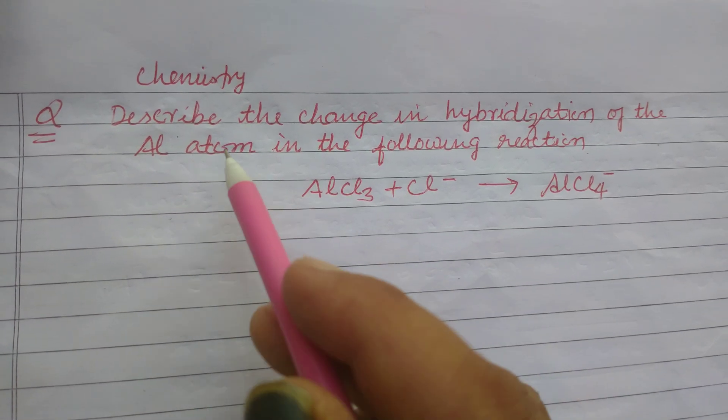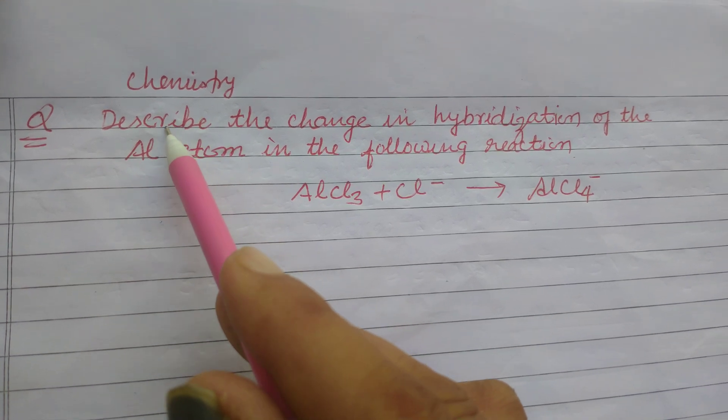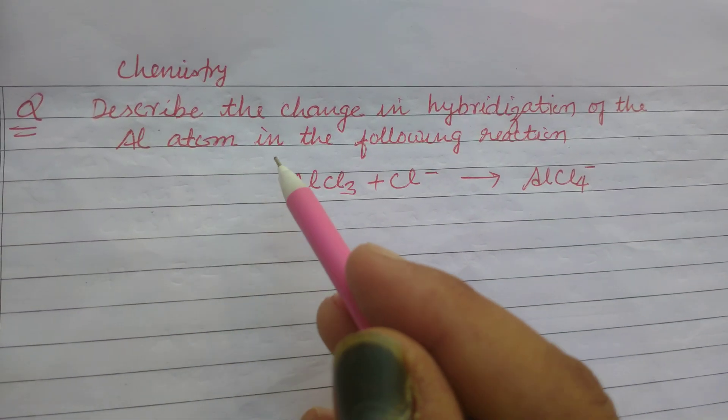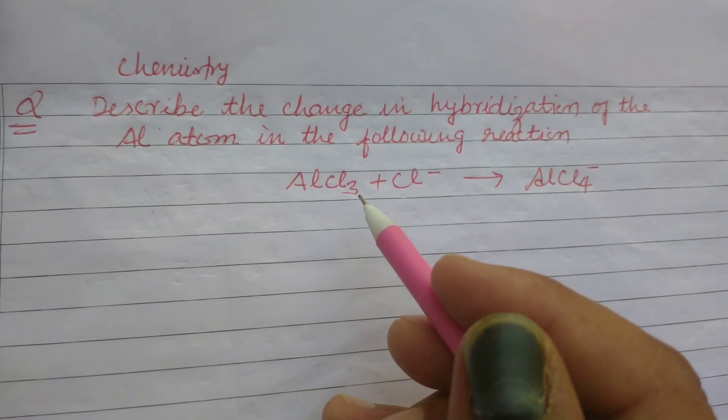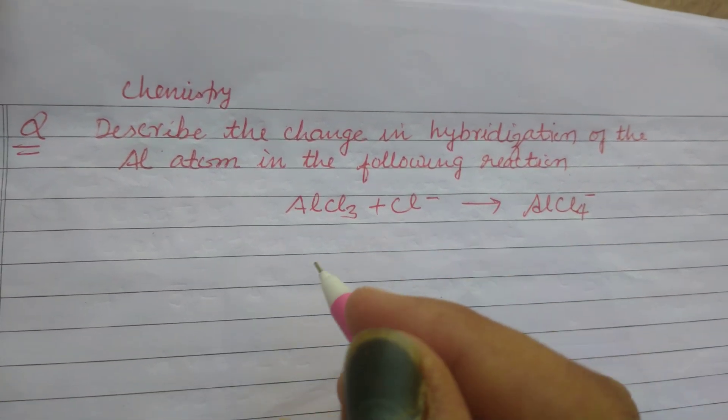Hello student. Welcome to this YouTube channel. Here is a question of chemistry from chemical bonding. Describe the changes in hybridization of the aluminum atom in the following reaction: AlCl3 plus Cl minus gives AlCl4 minus.